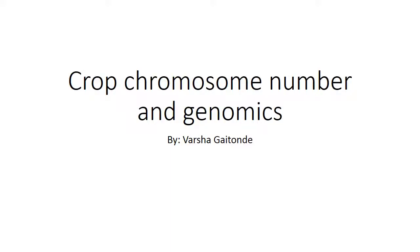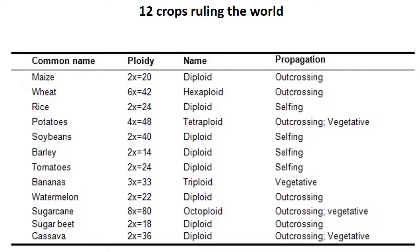Hello friends, this video is about crop chromosome number and genomics. There are 12 crops which were domesticated on a larger scale and are ruling the world. The first and foremost is maize — the ploidy number is diploid, with 2n = 20 chromosome number, and it is out-crossing.